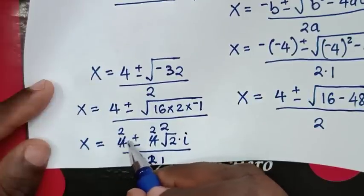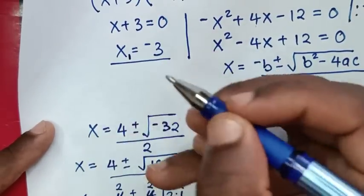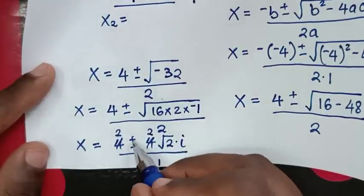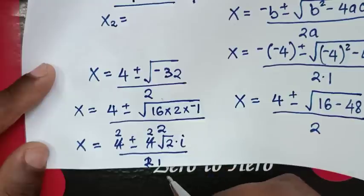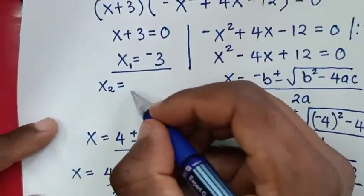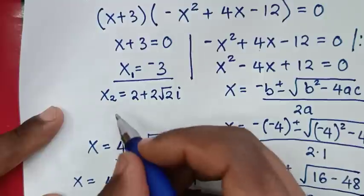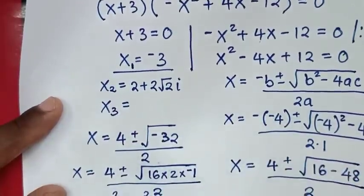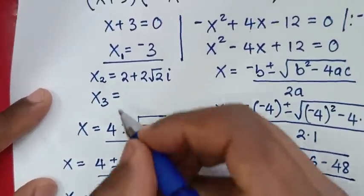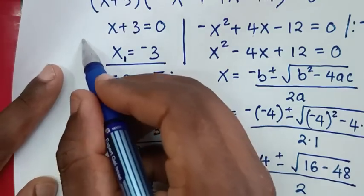Simplifying, the 4 and 2 cancel by dividing through. So for the complex solutions: the second value of x is 2 plus 2 square root of 2 times i, and the third value of x is 2 minus 2 square root of 2 times i.